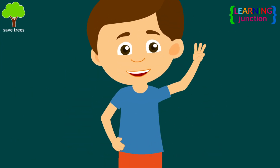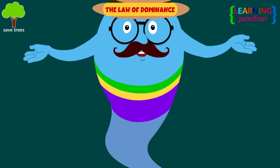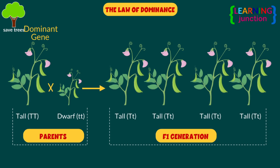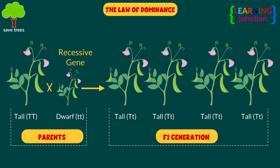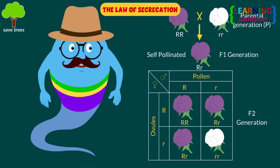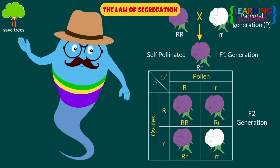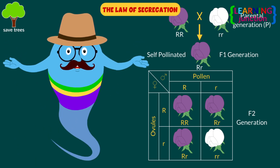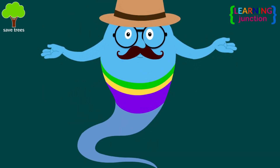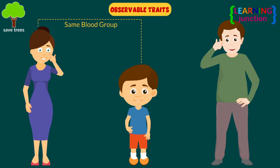Mendel's laws of heredity are usually stated as three points. The first is the law of dominance, which states that an organism with alternate forms of a gene will express the form that is dominant, meaning a dominant gene will express itself over the recessive gene. The second is the law of segregation. It states that each diploid individual has a pair of alleles for a particular trait. Each parent passes an allele at random to their offspring, resulting in a diploid organism. The allele enclosing the dominant trait determines an individual's observable trait, such as dominant hand, eye color, and blood type.